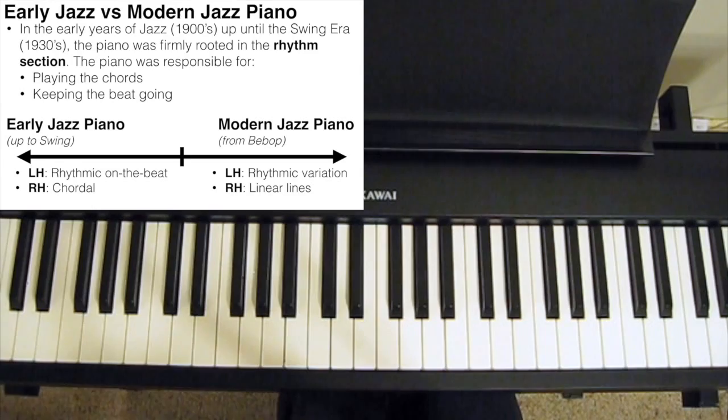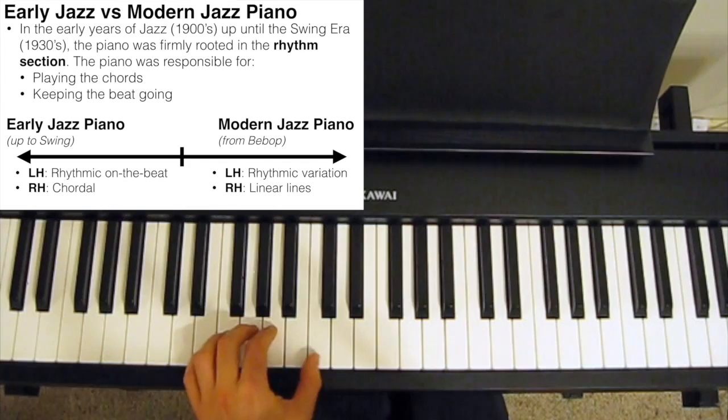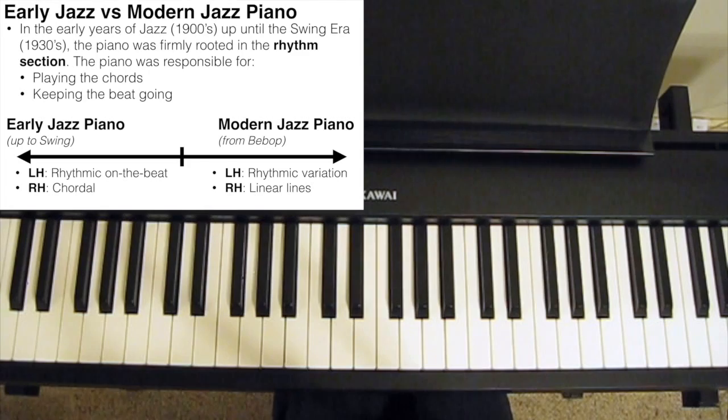So slowly, pianists realized that if the drummer is keeping the beat, and the bass player is playing a walking bass line and thus covering that bottom part of the register while also playing on the beat, then there's no need for the pianist to duplicate the effort. So that is varying your rhythm and just occasionally punctuating or pulsing the chords, often in between phrases.